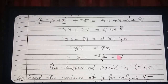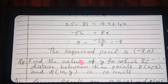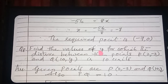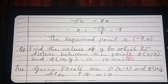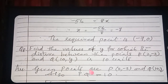These types of sums are very important questions. Now we move to the next question: Find the values of y for which the distance between the points P(2, −3) and Q(10, y) is 10 units. PQ equals 10 is directly given. We apply the distance formula and find PQ.